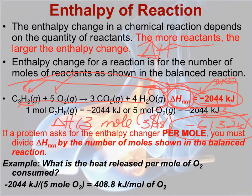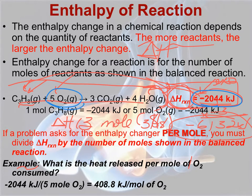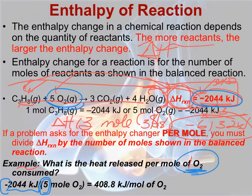The enthalpy doesn't always have to be discussed in terms of one particular reactant. It can be discussed in terms of any of the reactants or the products. For example, I may ask how much heat is released per one mole of oxygen consumed. You need to look at this reaction and say this 2,044 kilojoules released was for five moles of oxygen. So you would take 2,044 — remember the negative sign — and divide it by five to get how much per one mole. It's a simple matter of paying attention to the coefficients in the balanced reaction.